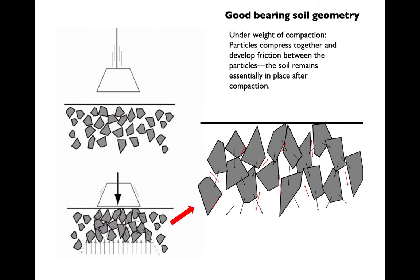The way we do that is we look at the mechanics of the soil itself and figure out a way to develop multiple, ideally infinite, load paths so that it's not just a patch of ground beneath us, but essentially the whole crust of the earth supporting the building. We look for soil with what we call good bearing geometry — particles that are hard and develop friction between them, so when we put weight onto the soil, the particles lock together and form a very sturdy base.